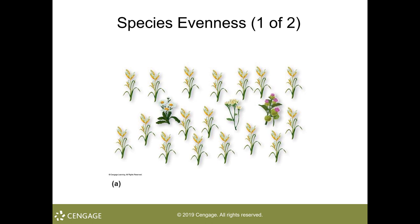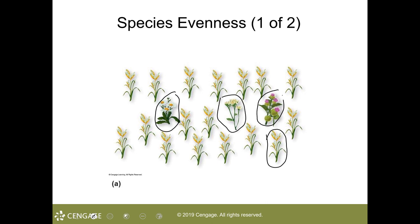Looking at figure 5417A, let's determine the species richness. We have this species, there is that species, there is this species, and finally the species we have here. The richness here in this community is four.